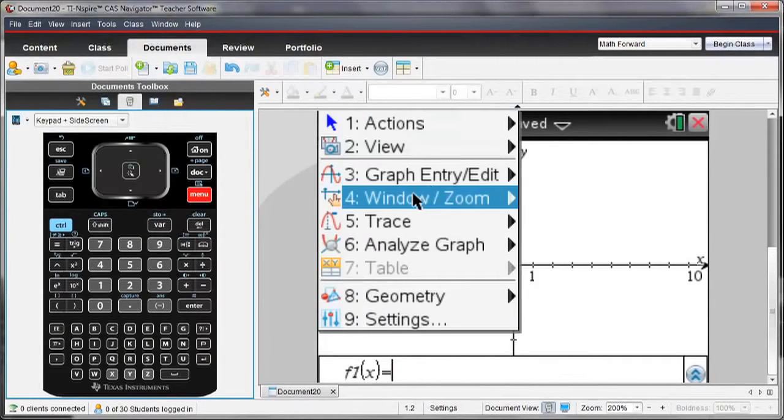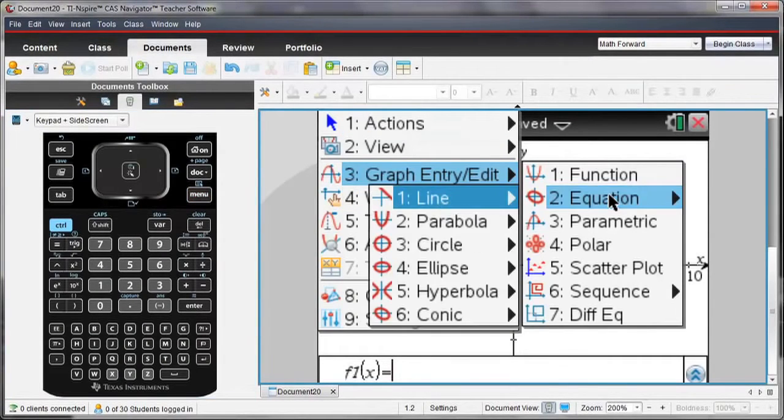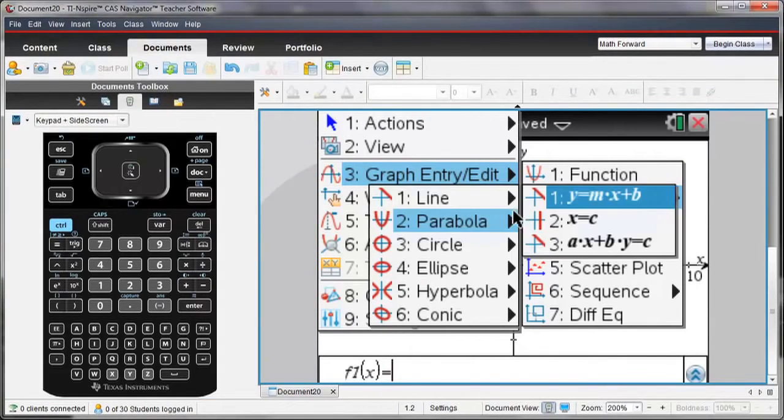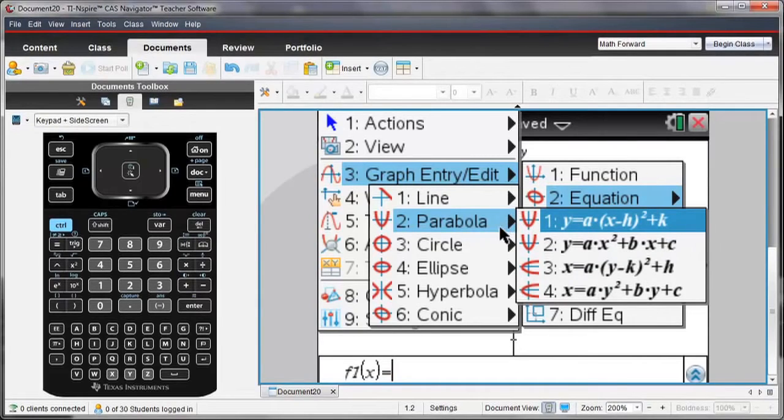I'm going to hit Menu, and in Graph Entry Edit, notice that there are now some conic sections available. Circle, ellipse, hyperbola, and a general conic section.